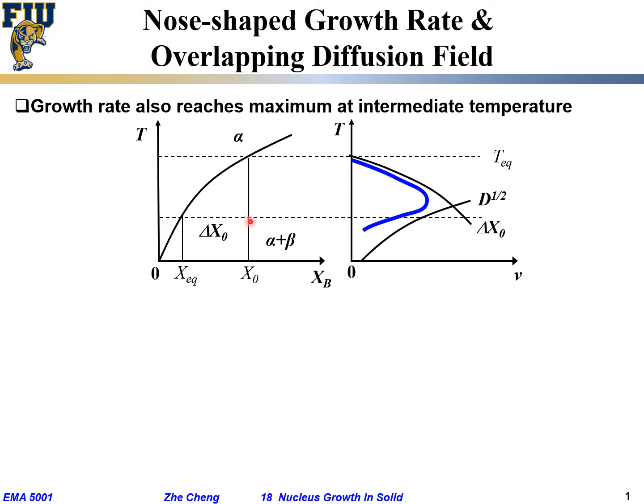From here to here, this delta T we would call undercooling. That's our so-called undercooling, and this is our equilibrium concentration.